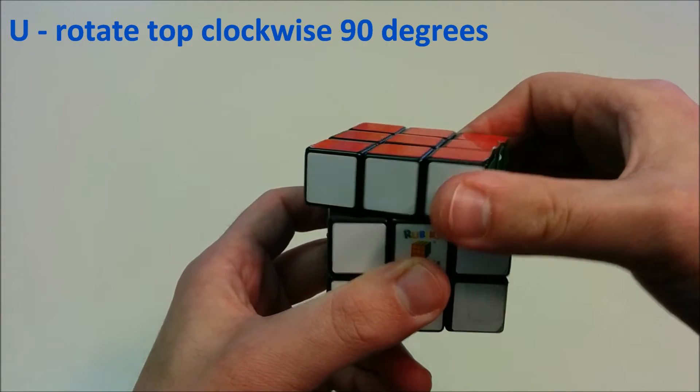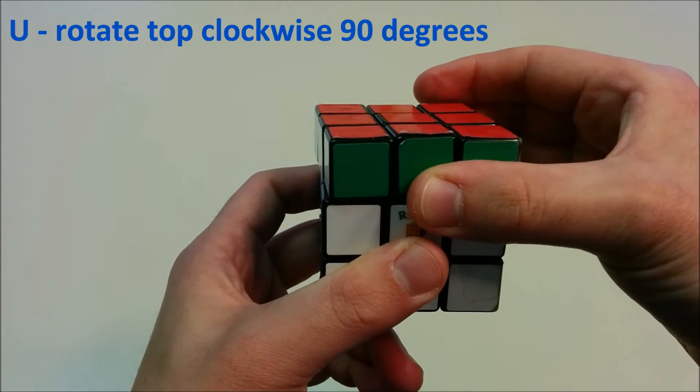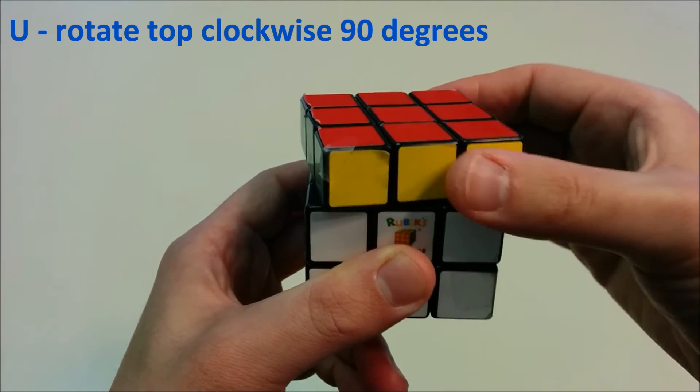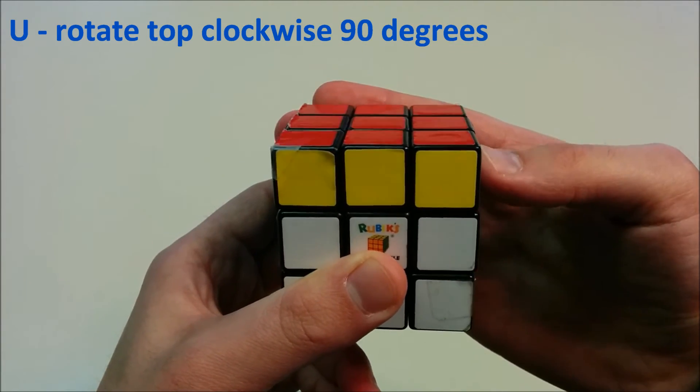The side which is on the top or up, this is the move U, which is a 90 degrees clockwise move.